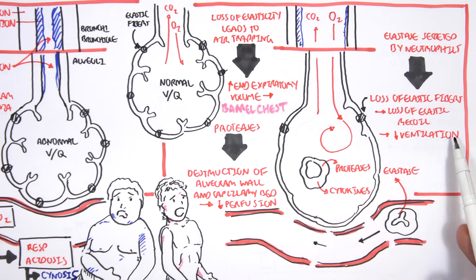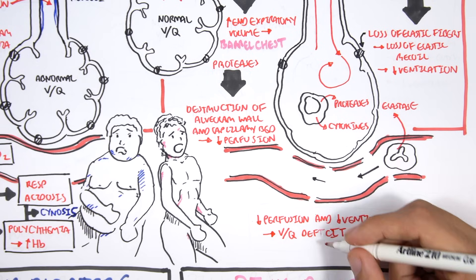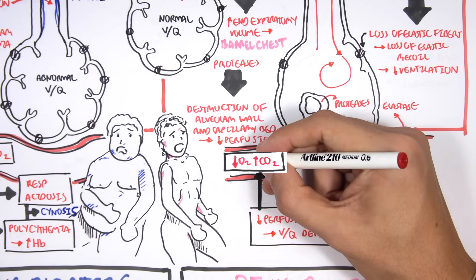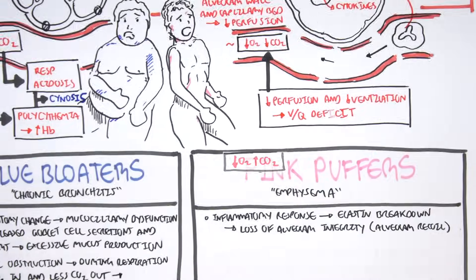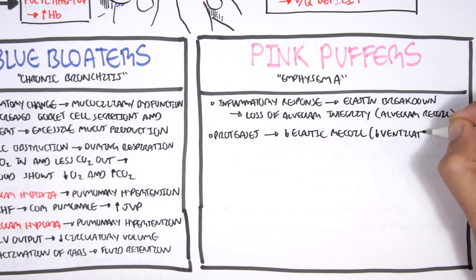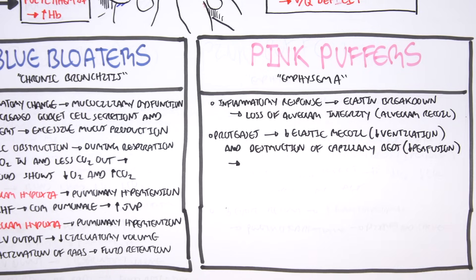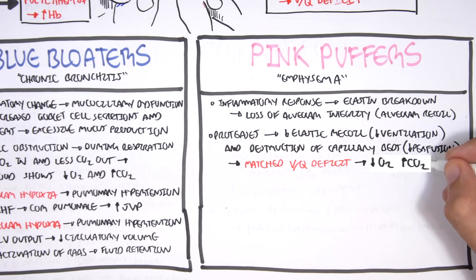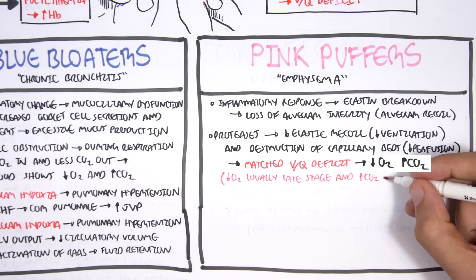The decrease in perfusion and the decrease in ventilation leads to a matched VQ deficit. As a result of this deficit, in the blood you see similar things to chronic bronchitis: a decrease in oxygen and an increase in carbon dioxide in the blood. Recapping what we just drew on the diagram, the proteases released by macrophages and neutrophils damages the elastic fibers leading to decrease in elastic recoil, which means a decrease in ventilation. The proteases also destroys capillary beds, which means a decrease in perfusion. Decrease in ventilation and perfusion means we have a matched VQ deficit. As a result of this VQ match deficit, we get hypoxemia and hypercapnia in the blood becomes more severe in late stage.